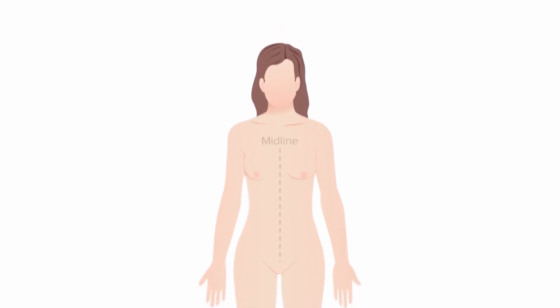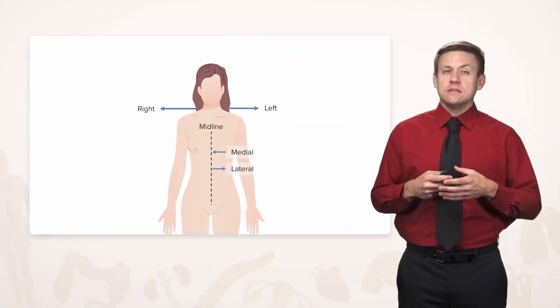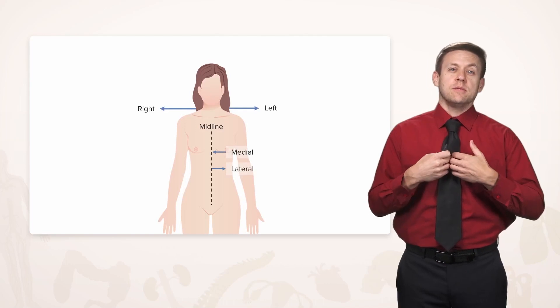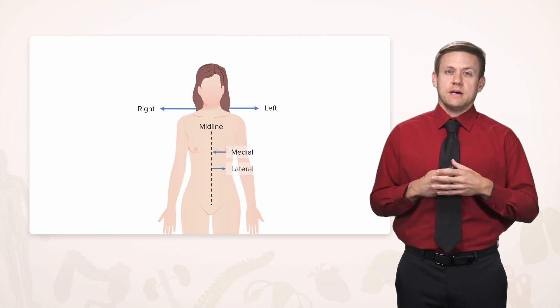And it helps to imagine a line, a vertical line, called the midline. And it's still okay to use the terms right and left. They're very helpful in orienting. But with respect to the midline, we're also going to use terms medial and lateral. Medial is going to mean closer to the midline of the body. Lateral is going to mean further away from the midline of the body.